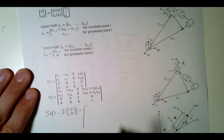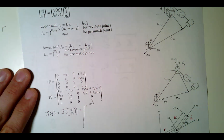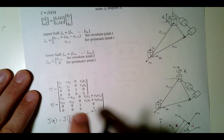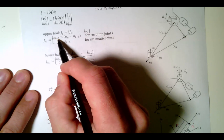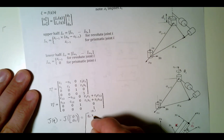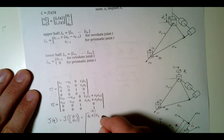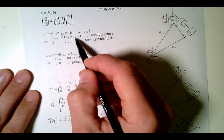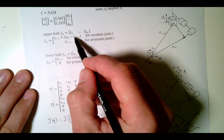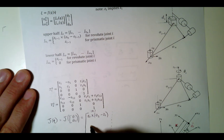My first column is for theta1. For theta1, it's a revolute joint, so the upper half is going to be z0 cross product with O2 minus O0. The bottom row for a revolute joint is just z0.